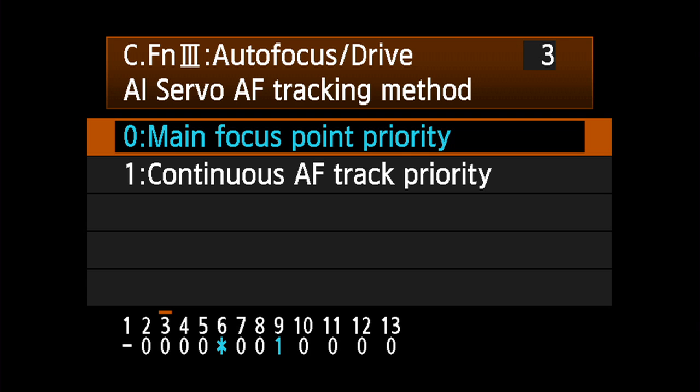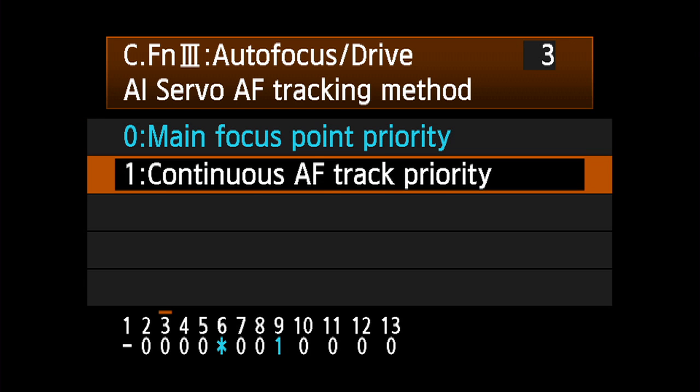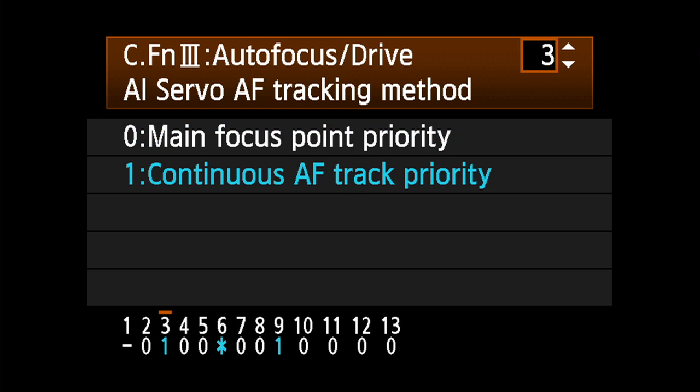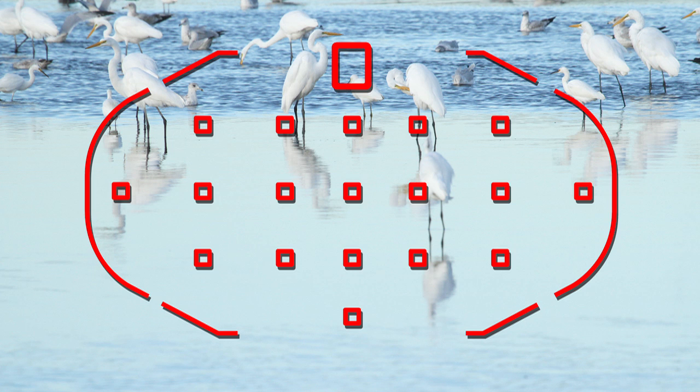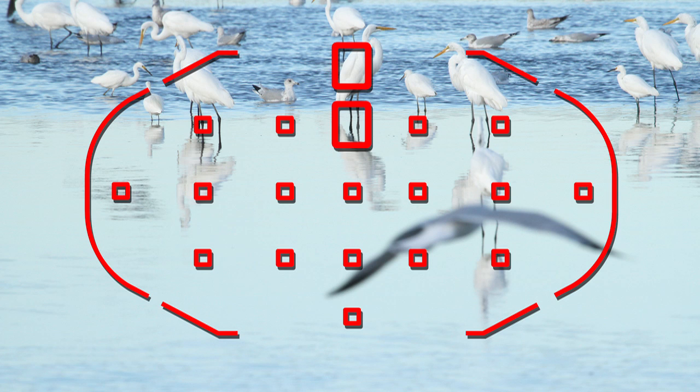With Continuous AF Track Priority, the camera will tend to ignore anything between you and your subject, especially if any of the outer points pick up a nearby subject.